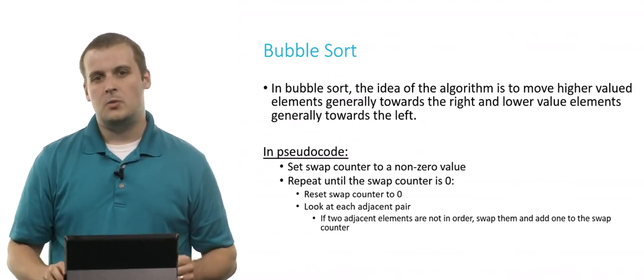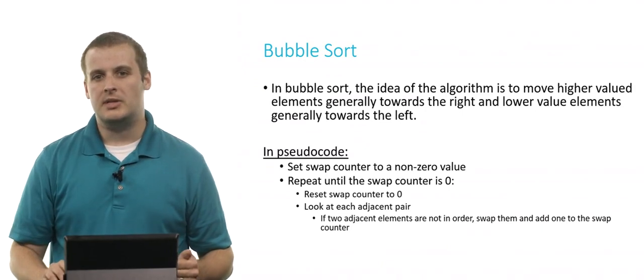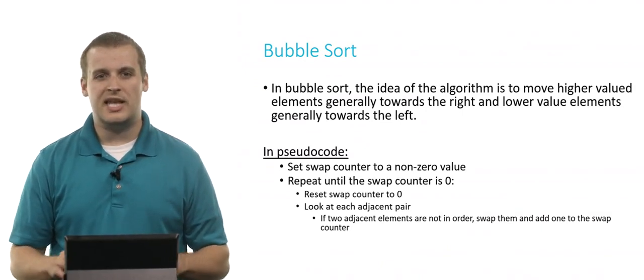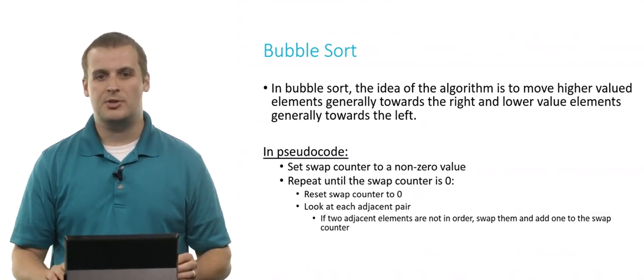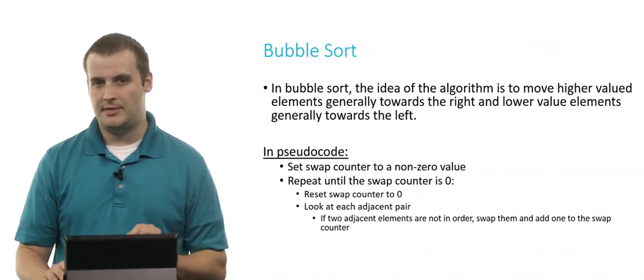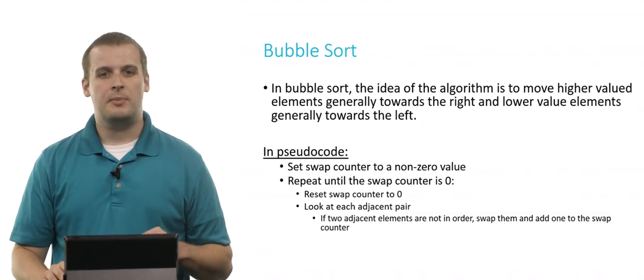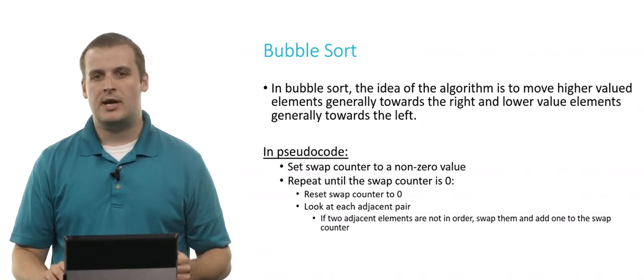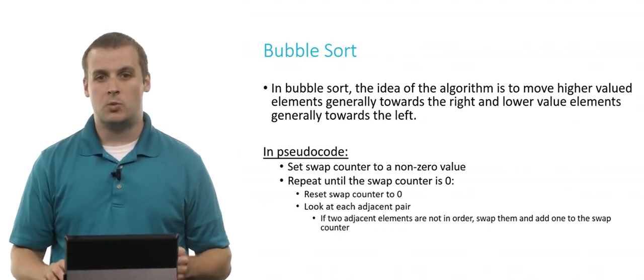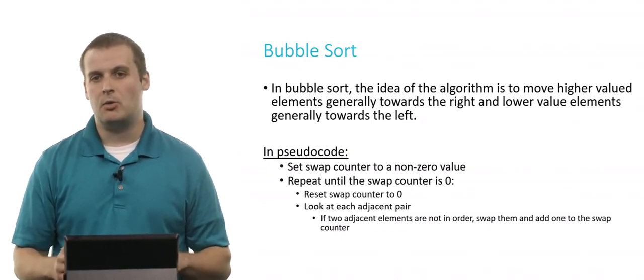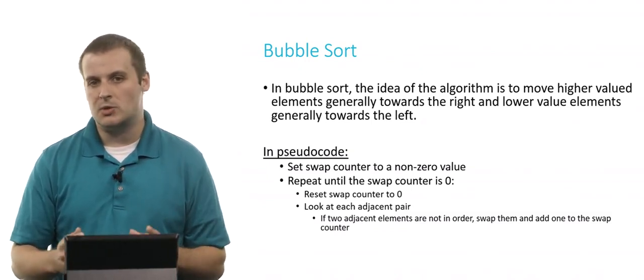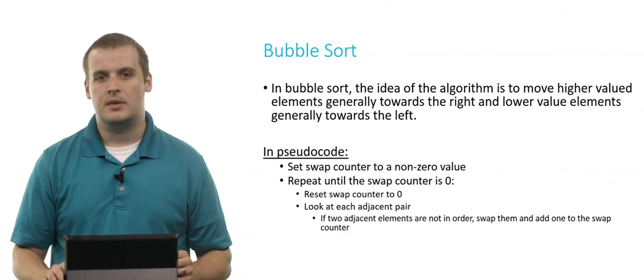How do we do this? In pseudocode, we could say: let's set a swap counter to a non-zero value. Then we repeat the following process until the swap counter is zero, or until we make no swaps at all.